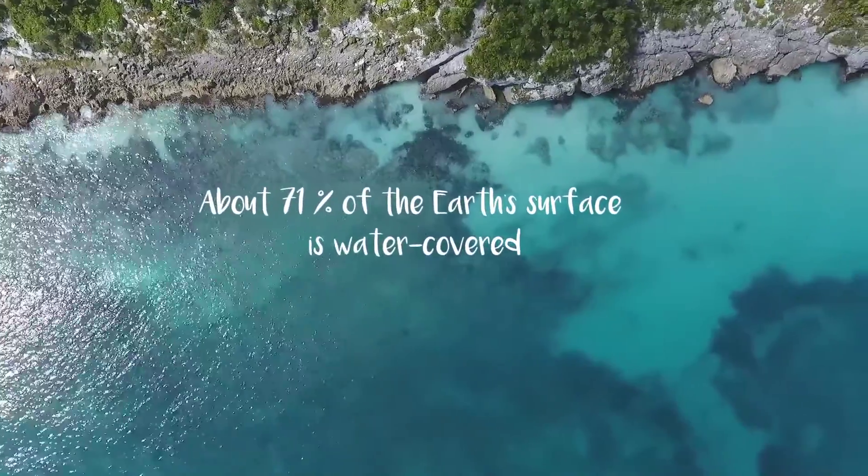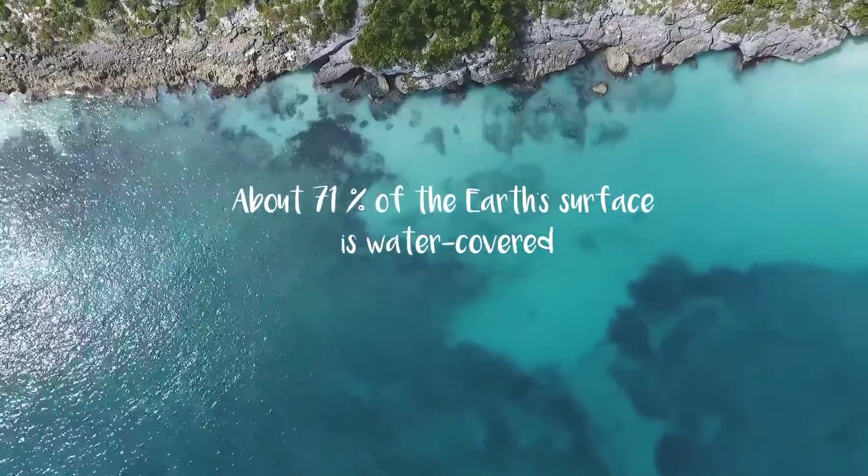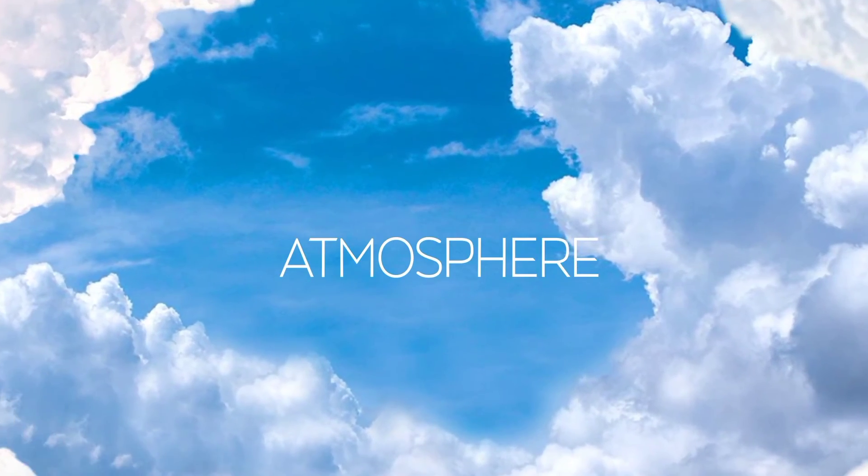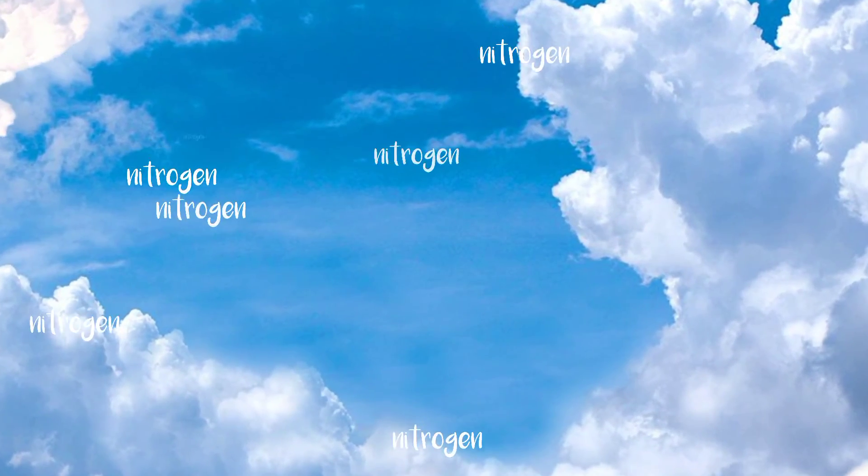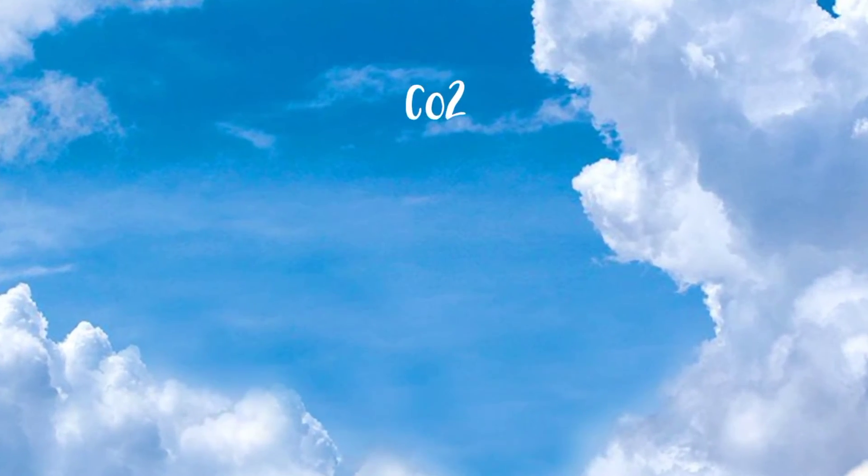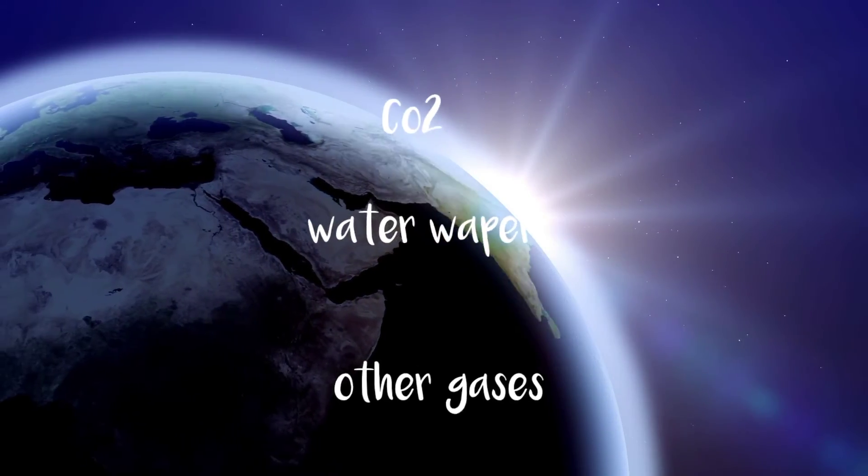Earth's surface is mainly covered with liquid water. The atmosphere is mainly nitrogen and oxygen, with smaller amounts of carbon dioxide, water vapor, and other gases.